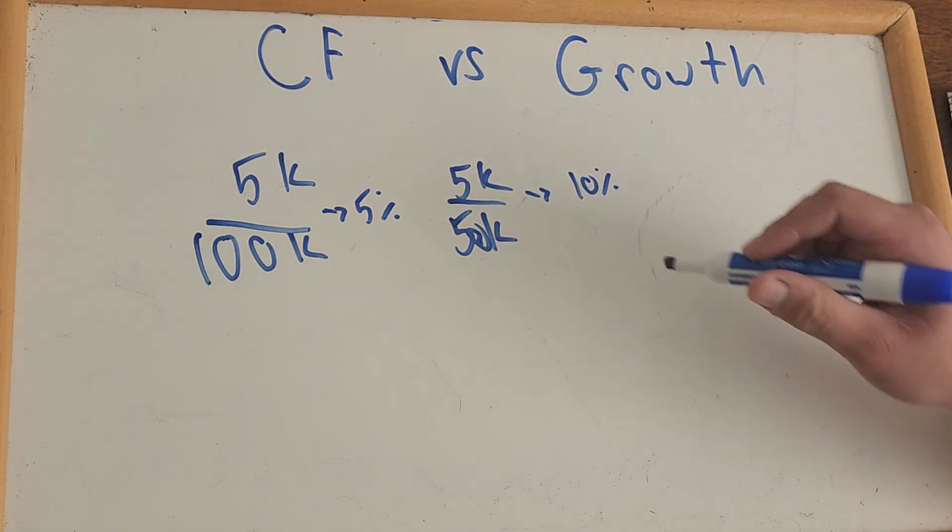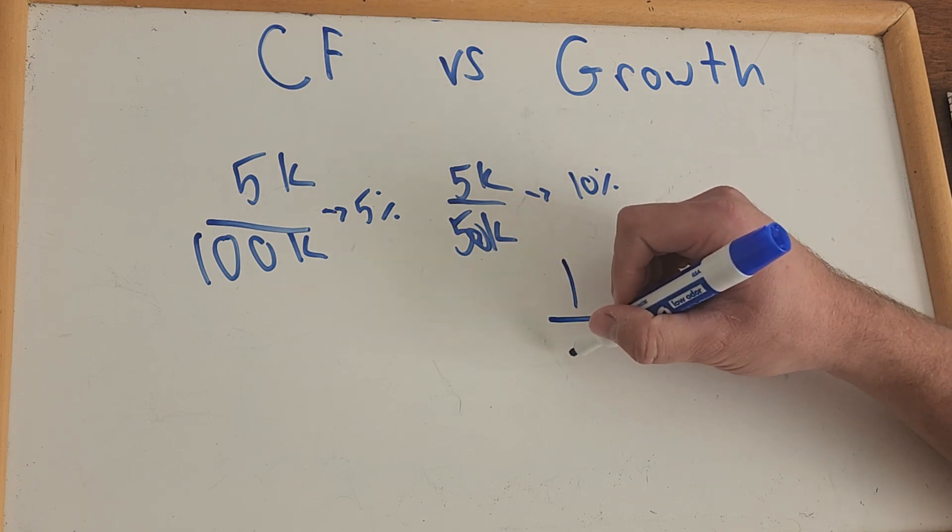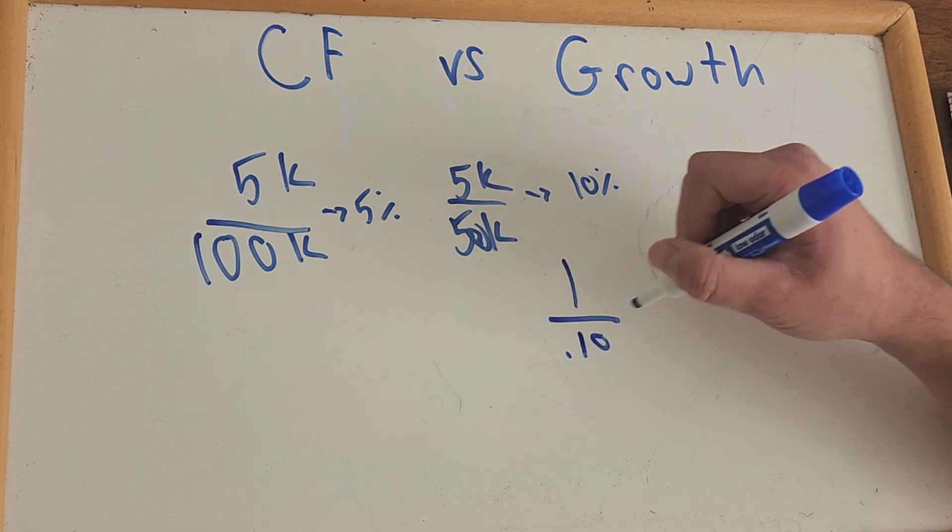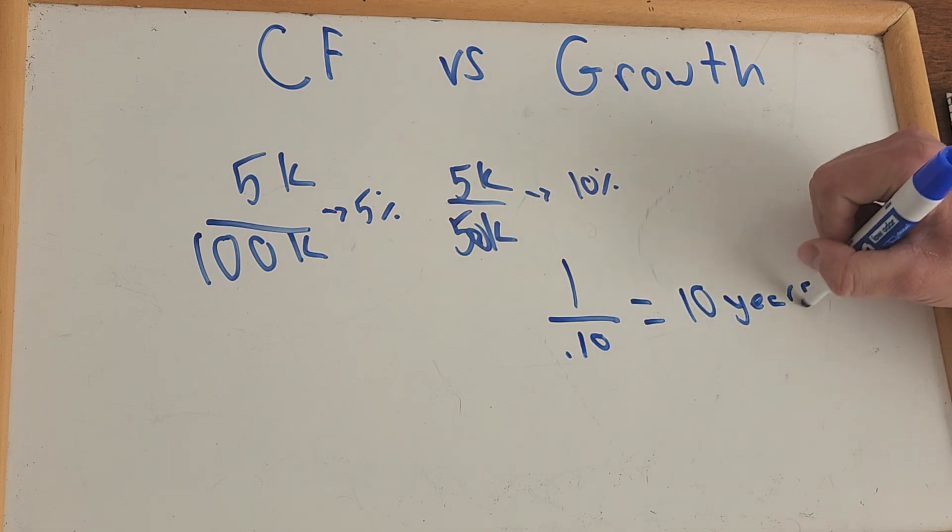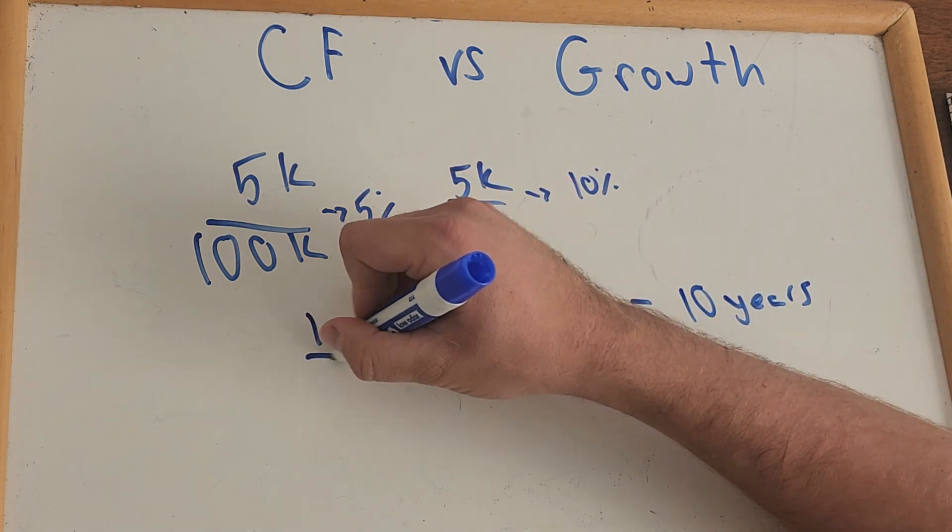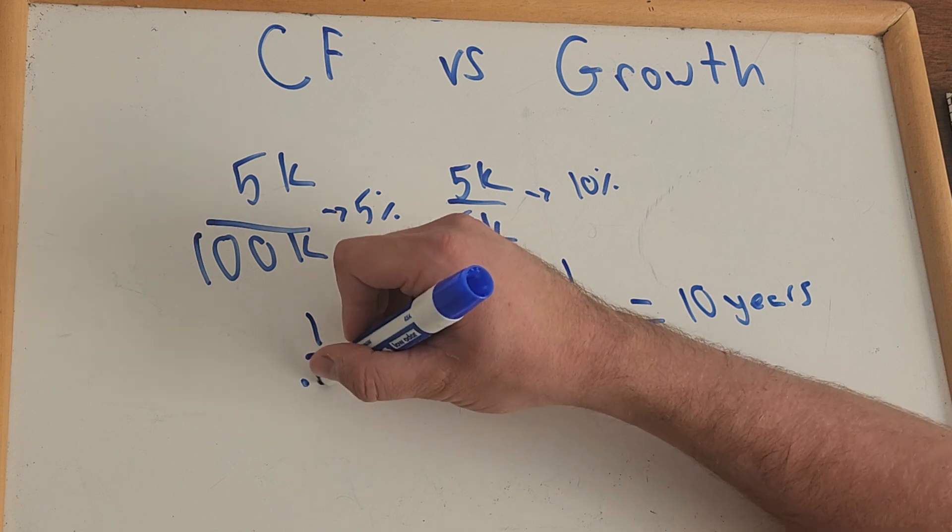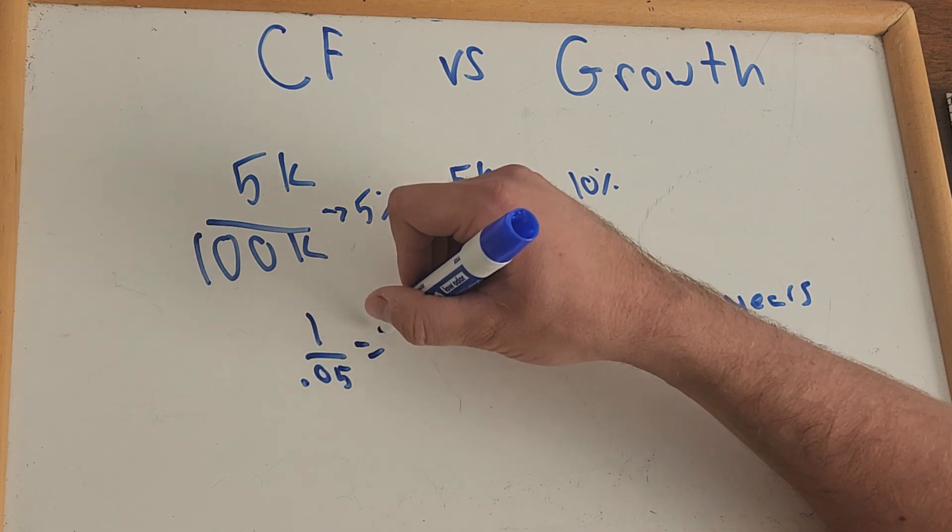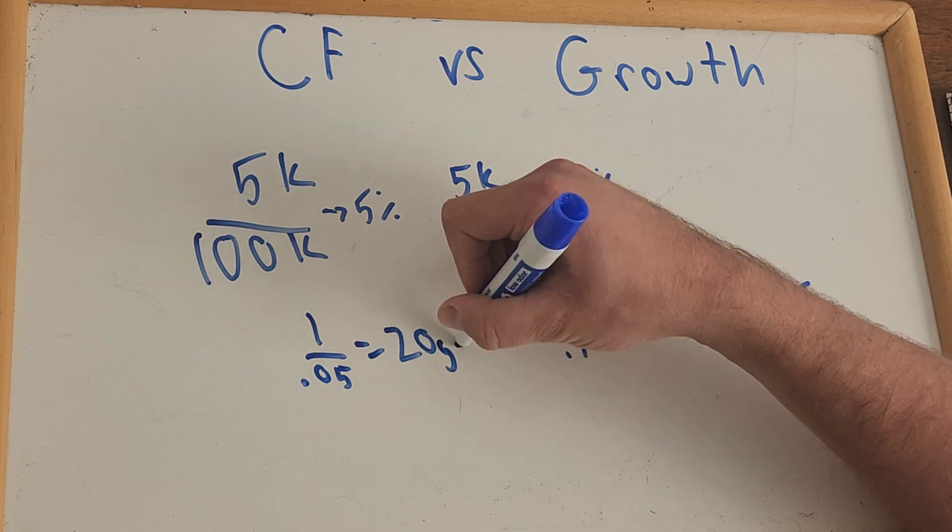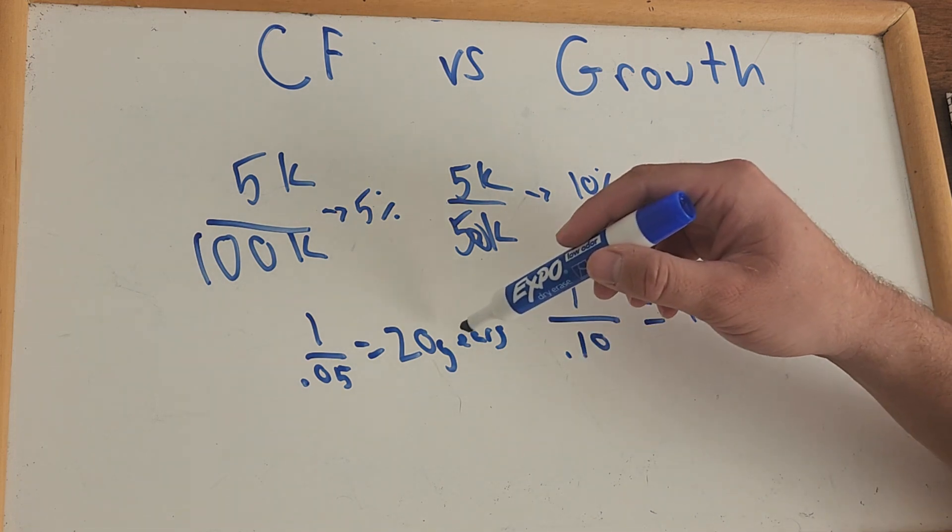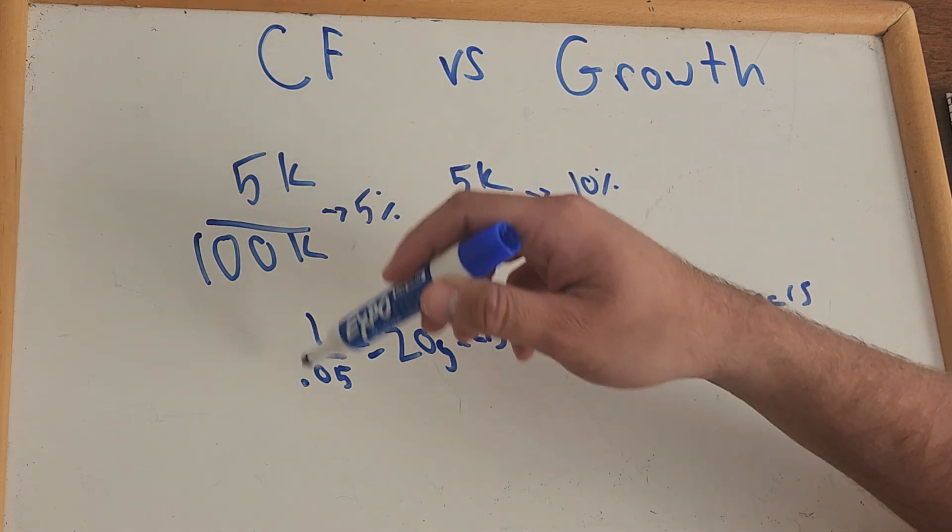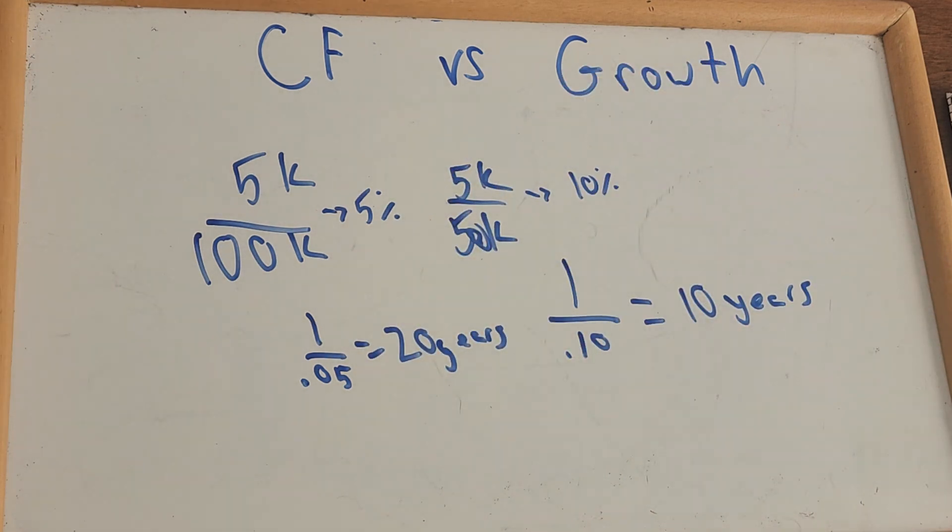The one with 10%, if we take 1 divided by 0.10, we get 10 years. And if we take 1 divided by 0.05, we get 20 years. So the property with the higher growth rate is typically going to produce less cash flow that's going to allow us to regain our investment back.